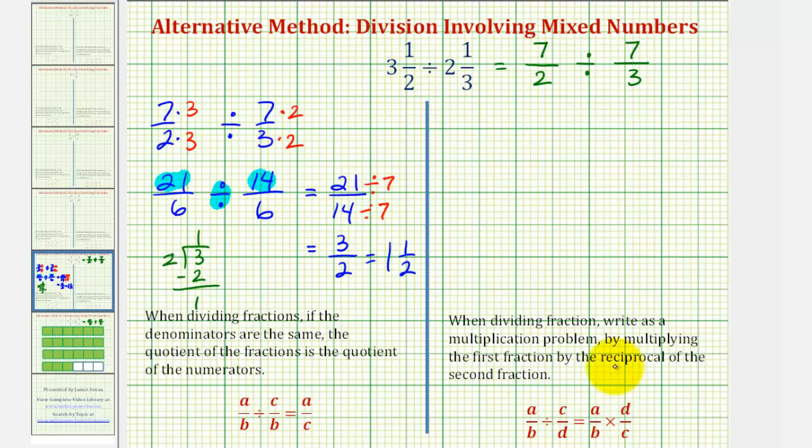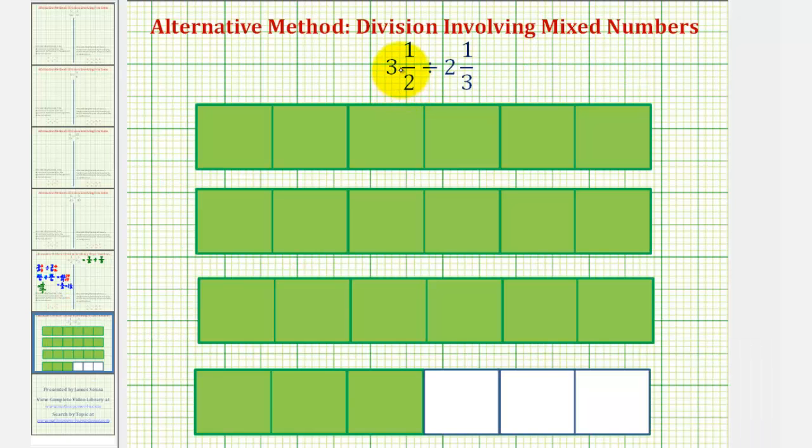Before we use our traditional method to find this quotient, let's take a look at a model that will help explain what's actually happening here. Again, we just saw that three and one-half divided by two and one-third is equivalent to 21-sixths divided by 14-sixths. So here the blue shaded region represents three and a half, or divided into sixths, this would be 21-sixths.